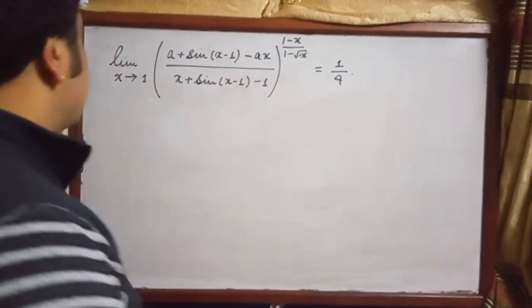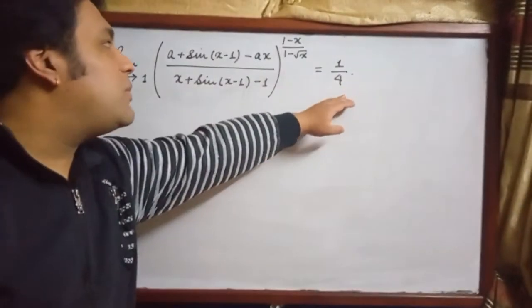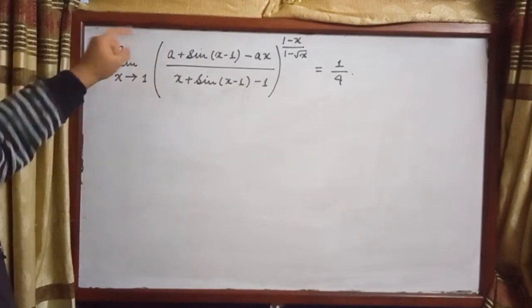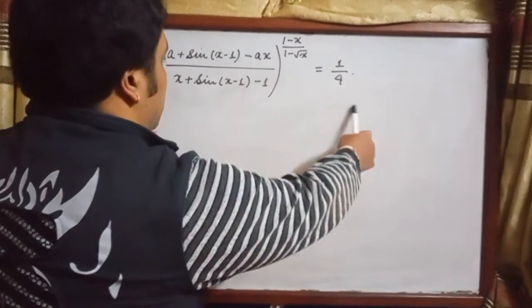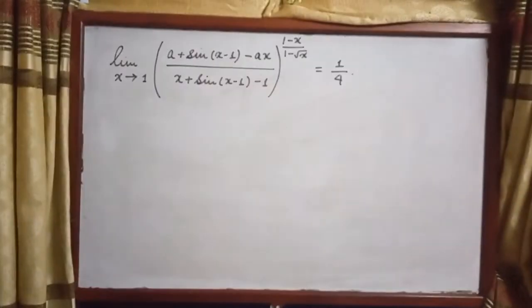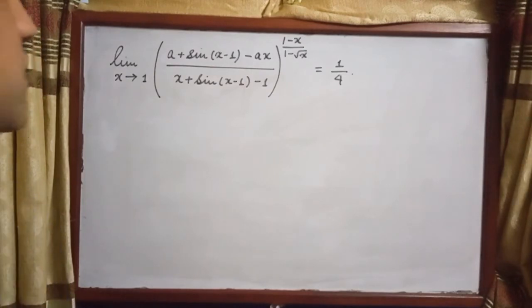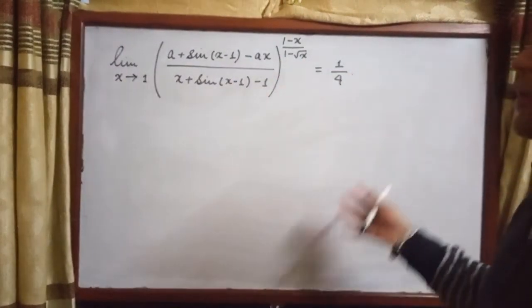Hello everybody, we have a calculus question today. We are given this limit and we need to find the largest non-negative integer a such that this limit is equal to 1/4. This question was asked in 2014 in the IIT JEE examinations in India, and I found this question on YouTube — it's worth discussing.